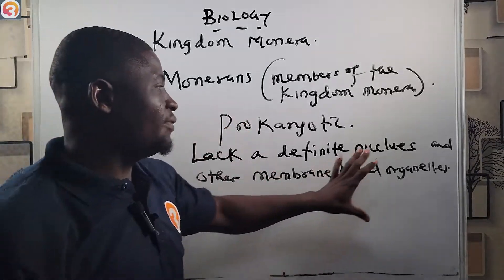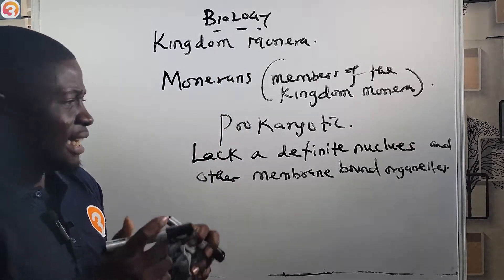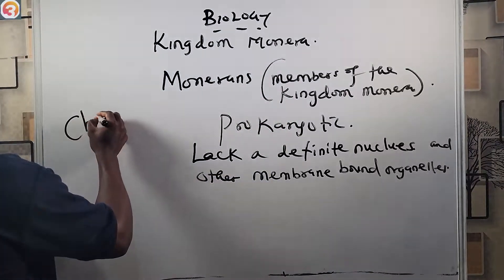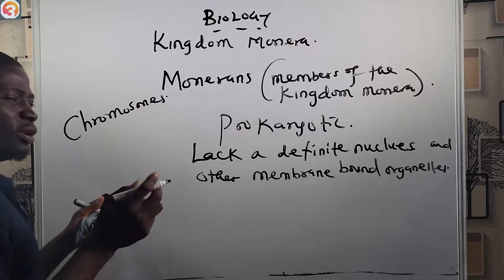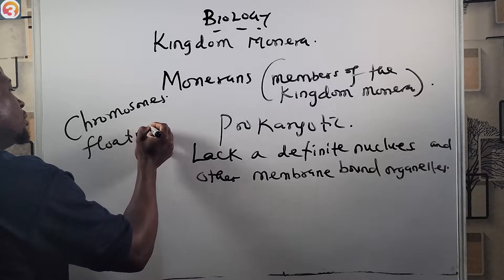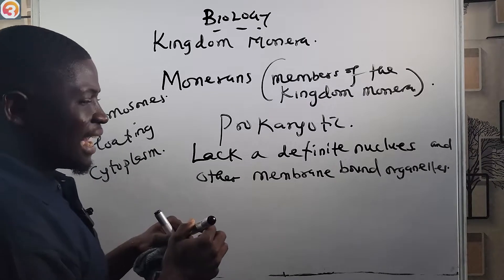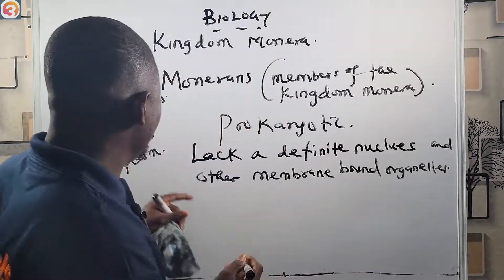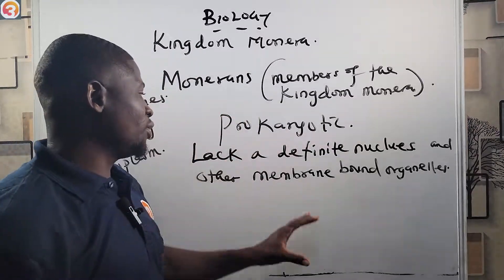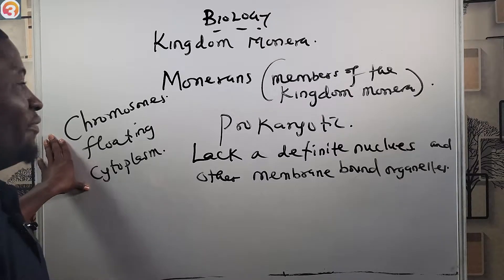Since monerans lack a definite nucleus and other membrane-bound organelles, their chromosomes are found floating in the cytoplasm. This is an important characteristic to take note of.